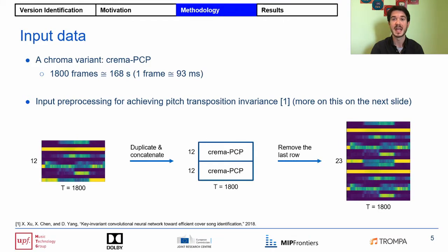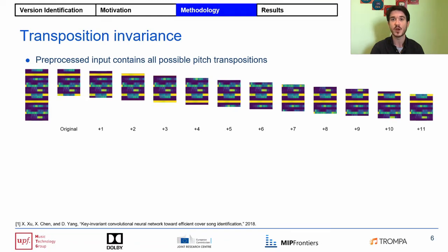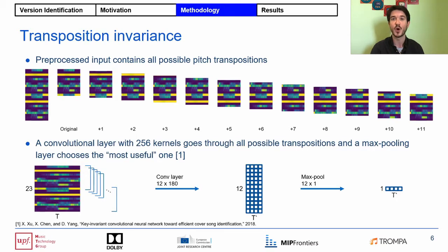First of all, the input data. Instead of using spectrograms or raw audio, we use a chroma feature variant which we call the chroma pitch class profile. This representation has a size of 12 on the frequency dimension, and on the time dimension we use 1800 non-overlapping frames, which correspond to a little less than three minutes. Before feeding this input to our network, we perform a simple pre-processing step following the idea of Chu et al. For each song, we duplicate these representations and concatenate them along the frequency axis, and then remove the last row to obtain an extended representation. This extended representation contains all the possible pitch transpositions for a given song, and we take advantage of this with a convolutional layer that goes through all possible pitch transpositions and a max pooling layer that chooses the most informative one.